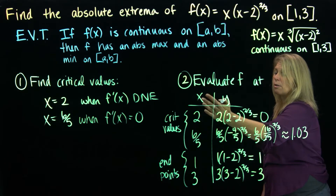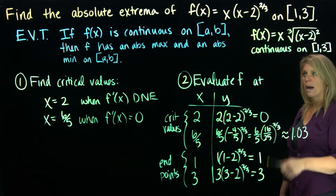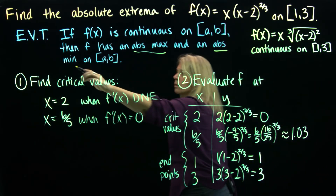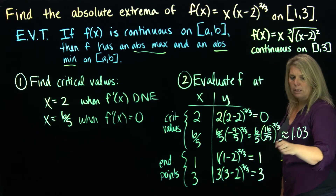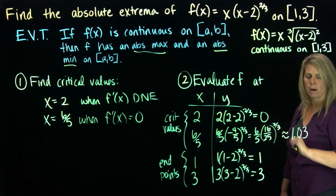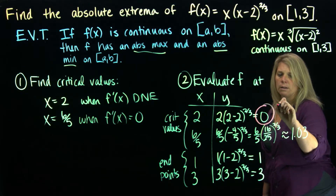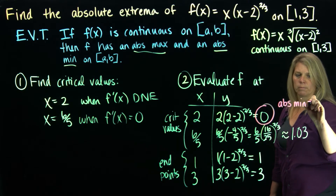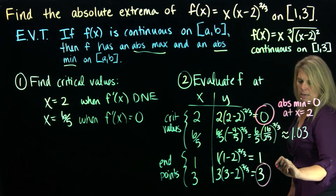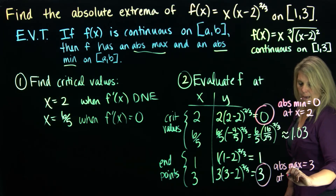I'm evaluating the function at critical values and endpoints, looking for the highest and lowest output values. The smallest output value is 0, so that's the absolute minimum, occurring at x = 2. The highest output value is 3, so that's the absolute maximum, occurring at x = 3.